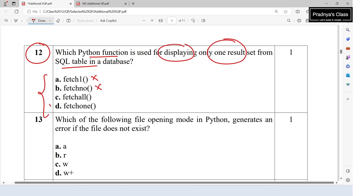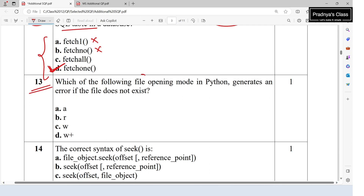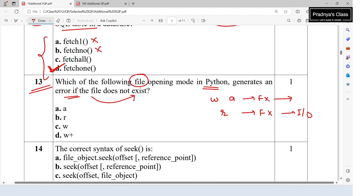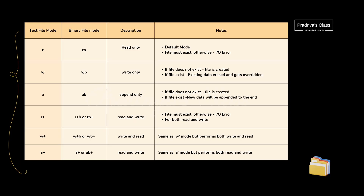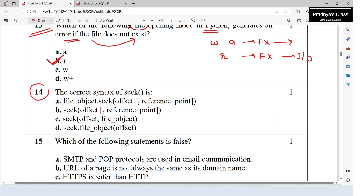The correct option for question 12 is D — fetchone. The thirteenth question asks which file opening mode generates an error if the file does not exist. In write mode and append mode, if the file doesn't exist a new file is created. In read mode, if the file doesn't exist it gives an error. So the correct option is 'r' — read mode. The fourteenth question asks for the correct syntax of the seek function.